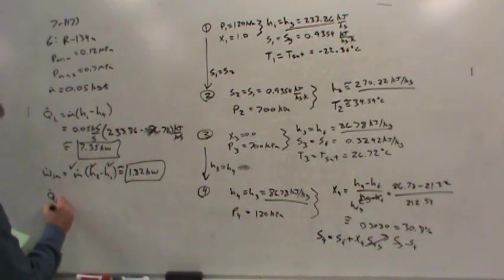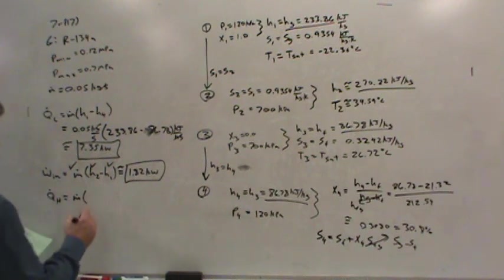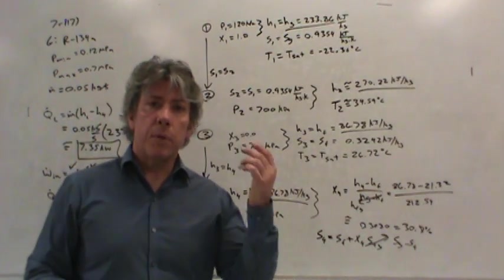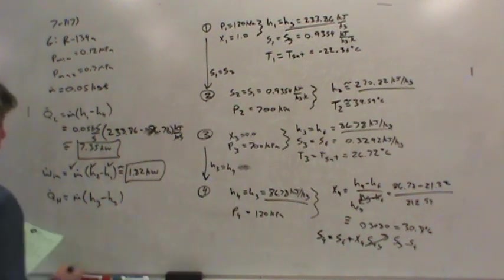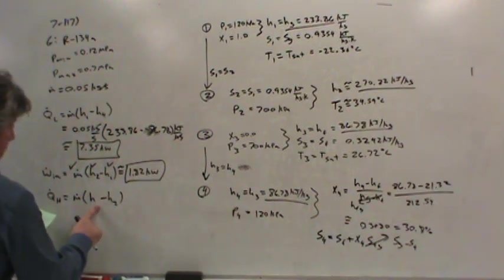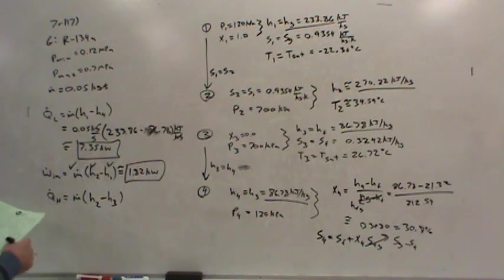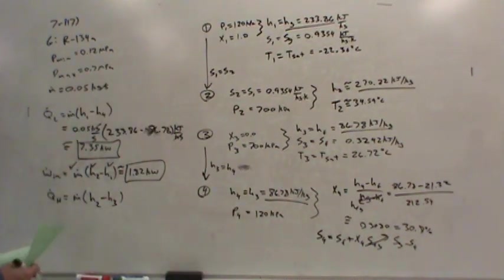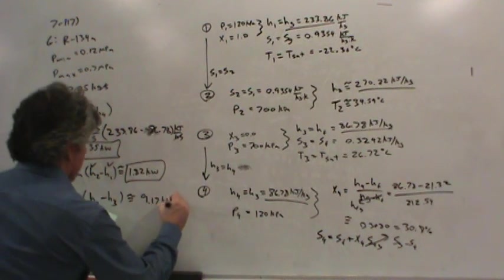What about the heat rejection rate? That occurs in the condenser after the compressor between states 3 and 2. State 2 had the higher energy, state 3 was lower. We know H2, H3, and the mass flow rate. This comes out to about 9.17 kilowatts.